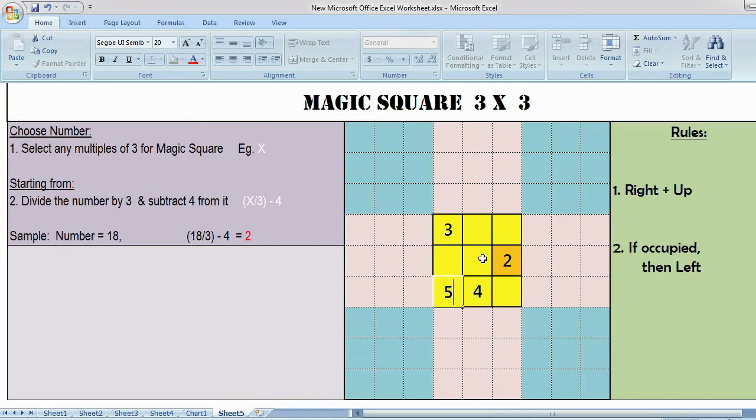Then right plus up, 6. Right plus up, 7. From here right and up, this is the position. When you try to match with the main box, this is already occupied by 5. So the second rule applies: if occupied, then left. 8 here.